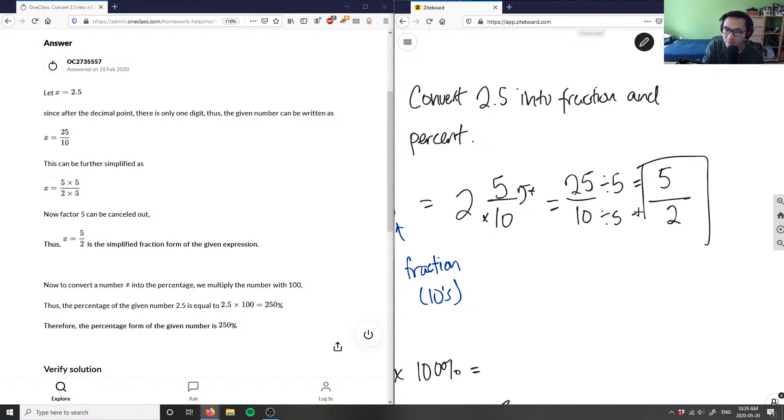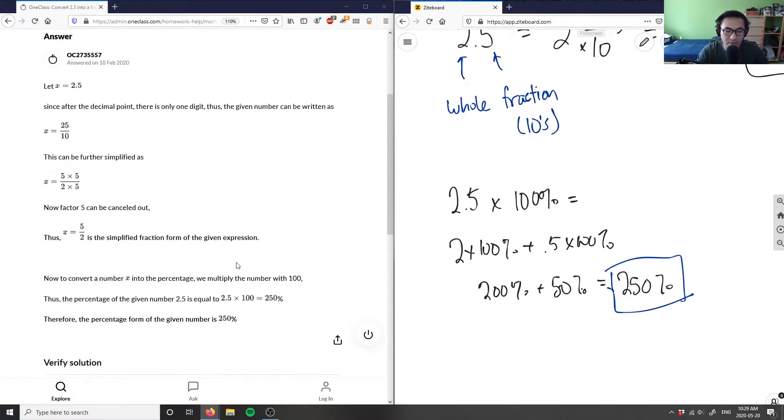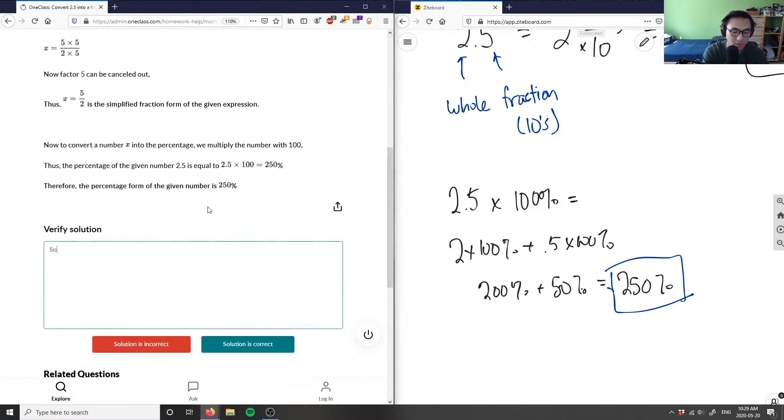So you get 5 over 2, which is the reduced form of the fraction. They got 5 over 2 as well, which is correct. And 250 is the percentage form of the given number, so the solution here is correct.